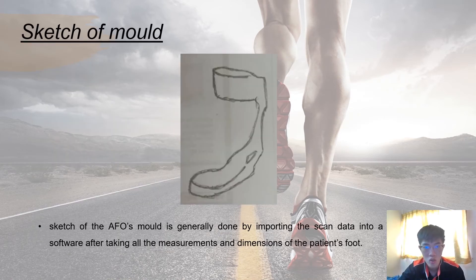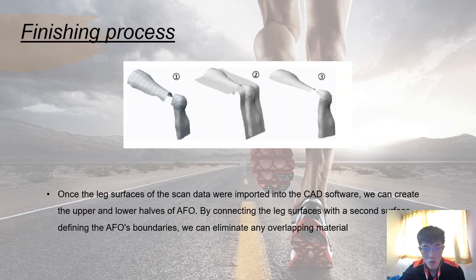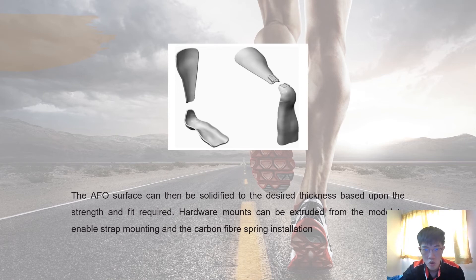This figure shows the sketch of the AFO model. The sketch of the AFO model is generally done by importing the scan data into a CAD software after taking all the measurements and dimensions on the patient's foot. For the finishing process, once the leg surfaces of the scan data were imported into the CAD software, we can create the upper and lower half of AFO. By connecting the leg surfaces with a second surface defining the AFO boundary, we can eliminate any overlapping material. The AFO surface can be solidified to the desired thickness based on the strength and fit required. Hardware mounts can be excluded from the model to enable slab mounting and carbon fiber spring installation.